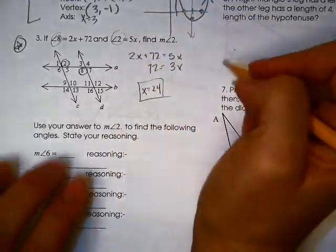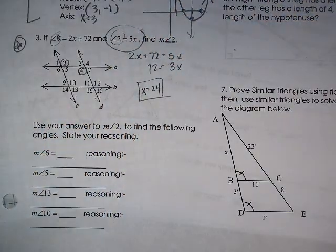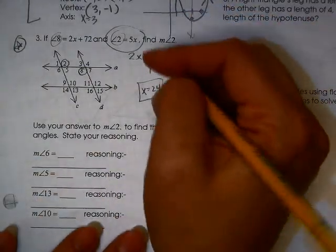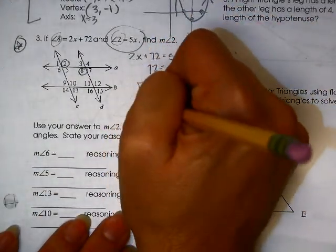But that's not what angle 2 is. Angle 2 is 24 times 5, which is 120 degrees.